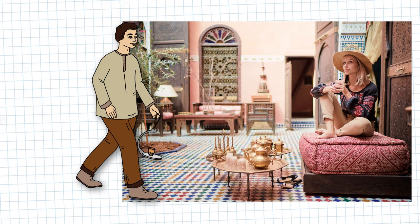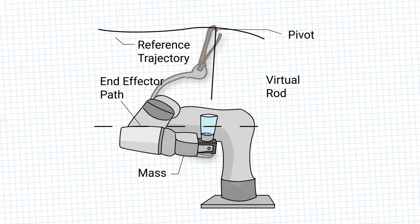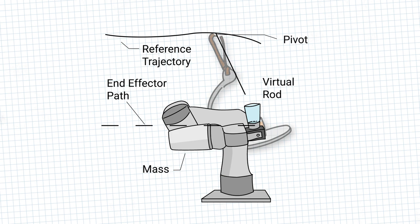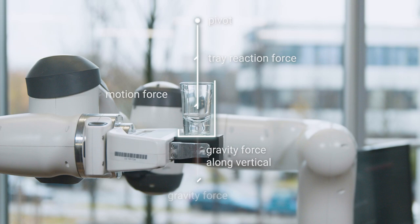This ensures that the resulting forces from the combined gravity and the cup acceleration are in the direction of the pendulum pivot. This way all forces are resisted by the tray and there are no lateral forces acting on the cup or the water inside.